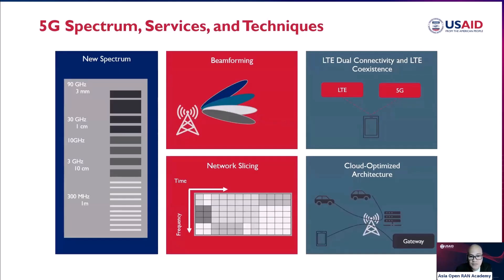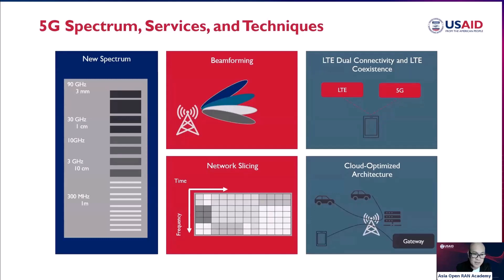Next is beamforming. In 5G, beamforming lets you use a special type of antenna that has many antenna elements. By combining those antenna elements, you can steer the beam toward where the subscribers are — either vertically or horizontally — and improve the antenna gain. We also apply massive MIMO, which uses multiple antennas on both the base station and the mobile device to improve signal quality and increase network capacity.